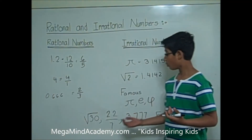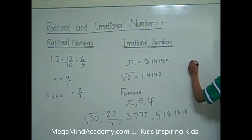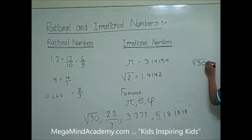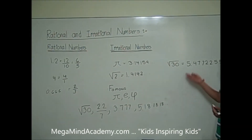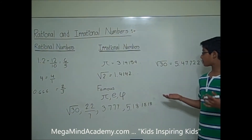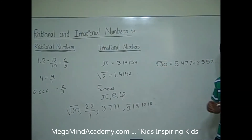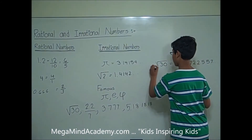Let's first find out whether the square root of 30 is a rational or irrational number. The square root of 30 is equal to 5.4772... This number never ends and does not have a repeating pattern, so the square root of 30 is an irrational number.